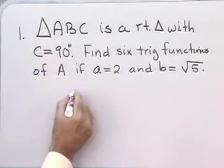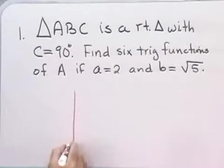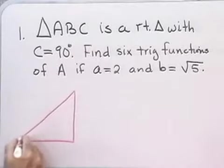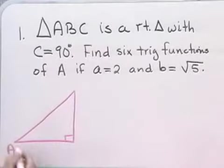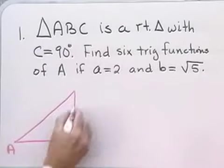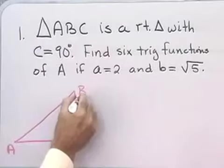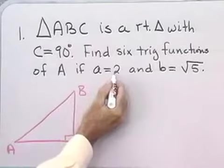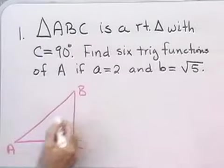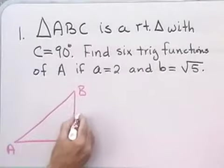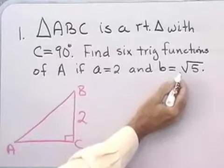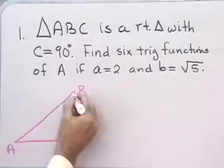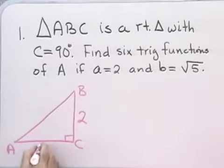The first thing we want to do is draw a little picture for reference. I'm going to draw a little right triangle and label the angles A, B, and make C the right angle. In this problem, side a is 2 — that's opposite angle A. Side b is square root of 5 — that's opposite angle B.